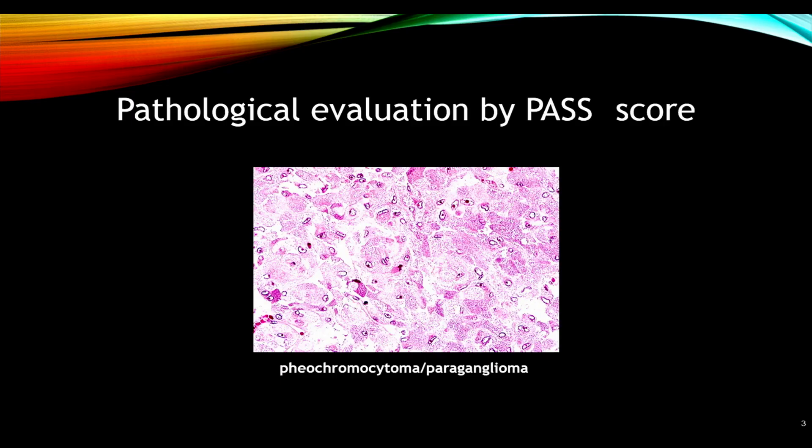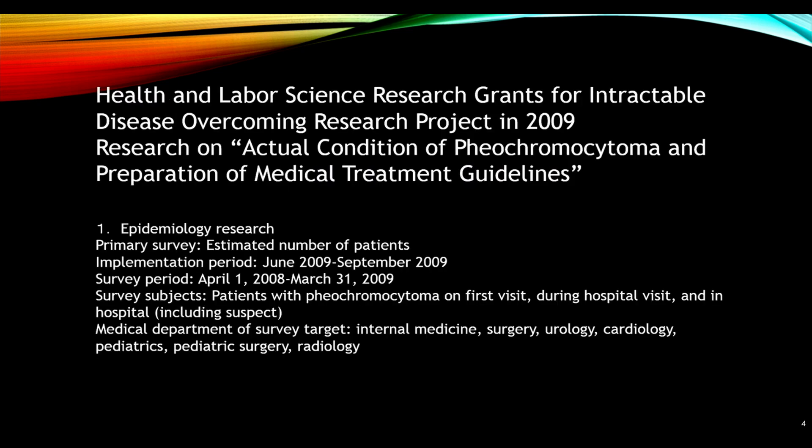I'm also bringing prospective data from prospective studies, including pathological evaluation by PASS score. This is a Japanese health and labor science research grant for an intractable disease overcoming research project in 2009, focused on the actual condition of pheochromocytoma and preparation of medical treatment guidelines.